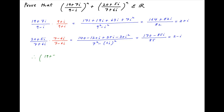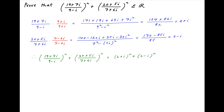Therefore, the given expression — 19 plus 7i divided by 9 minus i, raised to the power n, plus 20 plus 5i divided by 7 plus 6i, whole raised to the power n — simplifies to 2 plus i raised to the power n, plus 2 minus i raised to the power n.